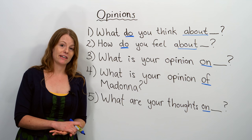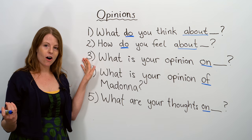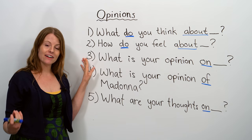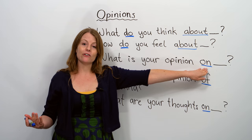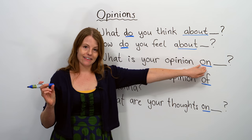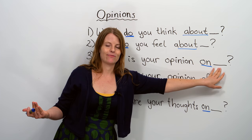Let's look at another way to ask for somebody's opinion. We can also say: what is your opinion on education? What is your opinion on learning English? What is your opinion on Mickey Mouse? You can ask people their opinion on anything. Notice the preposition we're using here — after the word opinion, we have the little word on, and then you say the topic. For example, what is your opinion on the TV show Friends?